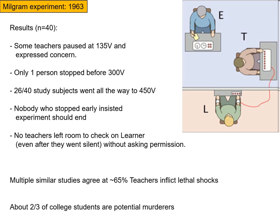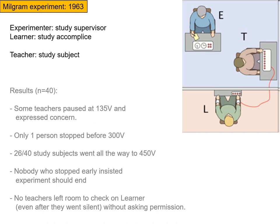A variety of similar studies agreed that about two-thirds of all recruited teachers would go all the way to essentially killing the learner. What that means is about two-thirds of college students are potential murderers — this is not a euphemism, not a joke, not an exaggeration. This is the actual result of this experiment. Two-thirds of them electrocuted the learner to the point where they could no longer respond.